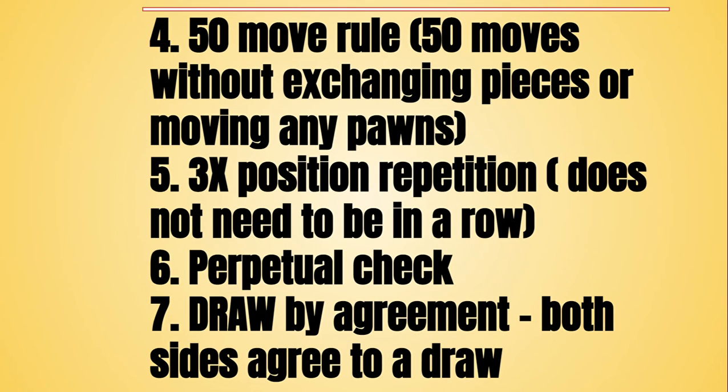Number four is the 50-move rule. Basically it's 50 moves without exchanging pieces or moving any pawns. That's pretty simple enough, and usually beginning players would encounter this situation.